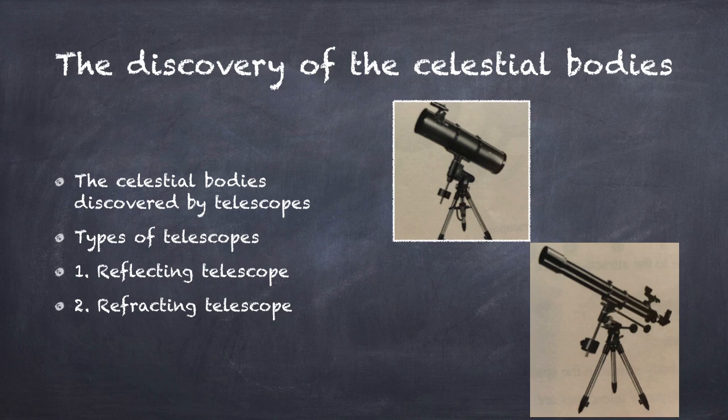To discover the celestial bodies we must use telescopes. There are two types of telescopes: reflecting telescope and refracting telescope.